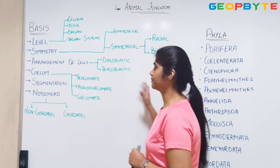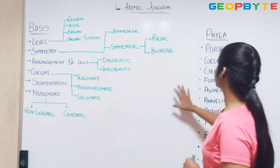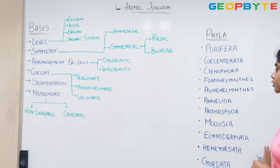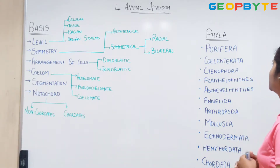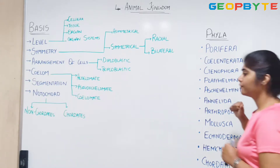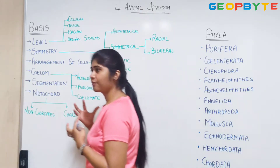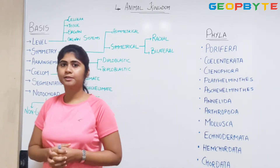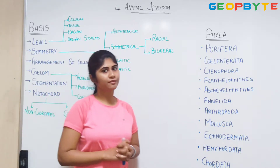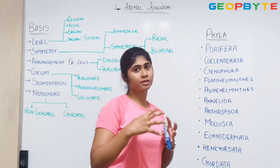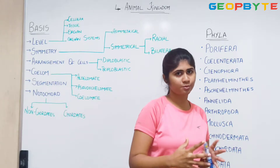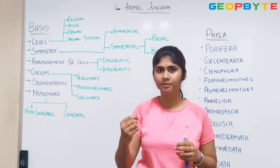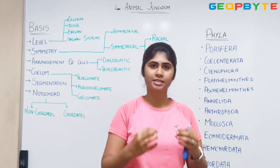Under Animal Kingdom, we have different phyla. We have 11 phyla under Animal Kingdom. Now, why do we even have to classify Animal Kingdom again? Like in the previous case of Plant Kingdom, there were millions of species and we have to study them.